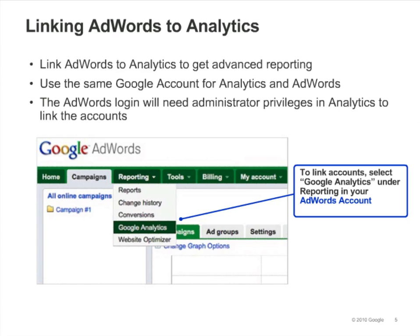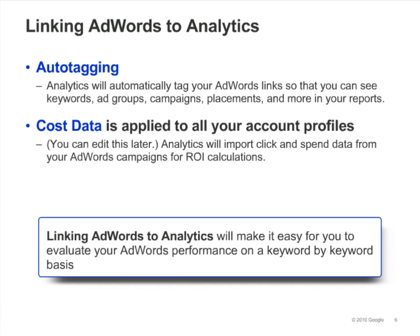By linking Google Analytics to your AdWords account, you can get advanced reporting that measures performance and ROI for your AdWords campaigns. Within AdWords, select Google Analytics under the Reporting tab to link your accounts. The AdWords login that you're using will need administrator privileges in Analytics in order to link the accounts. If you don't already have an Analytics account, you'll be able to create one. When you link your accounts, you should enable Destination URL Autotagging. This option allows you to differentiate your paid ads from organic search listings and referrals, and allows you to see detailed campaign information in the AdWords section of your Traffic Sources reports. Your cost data — the information about clicks and keyword spending — will be applied once you link your accounts.